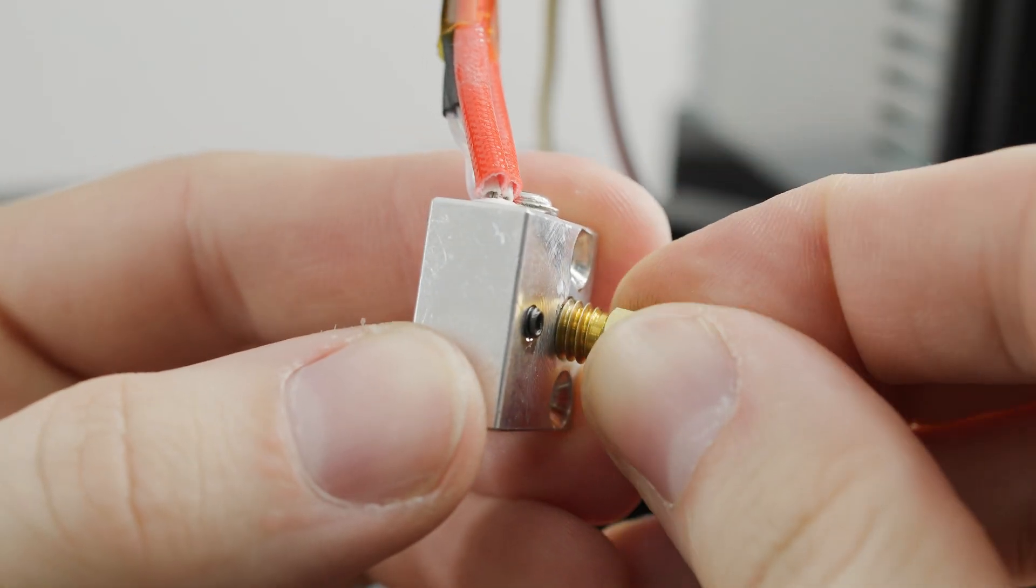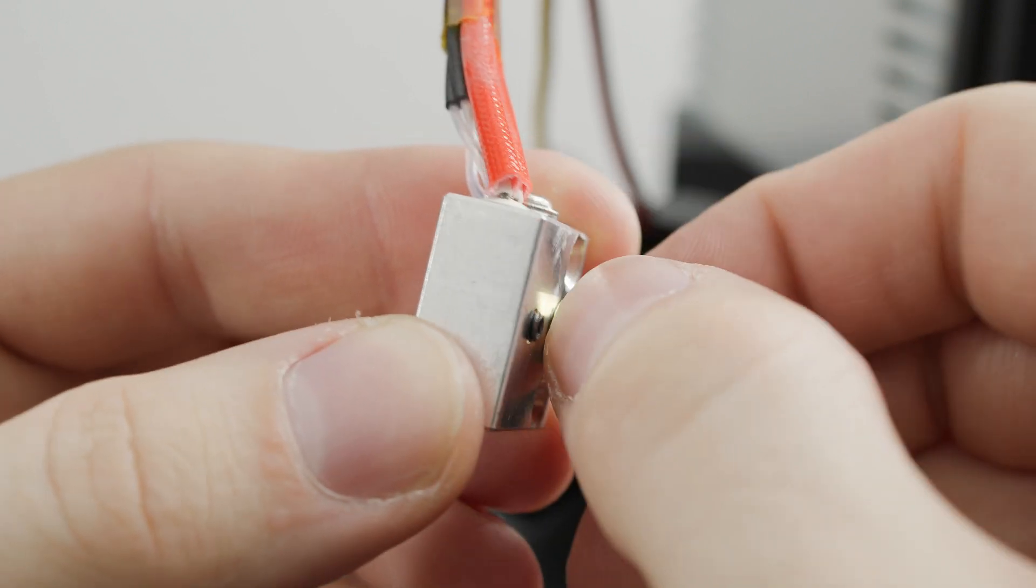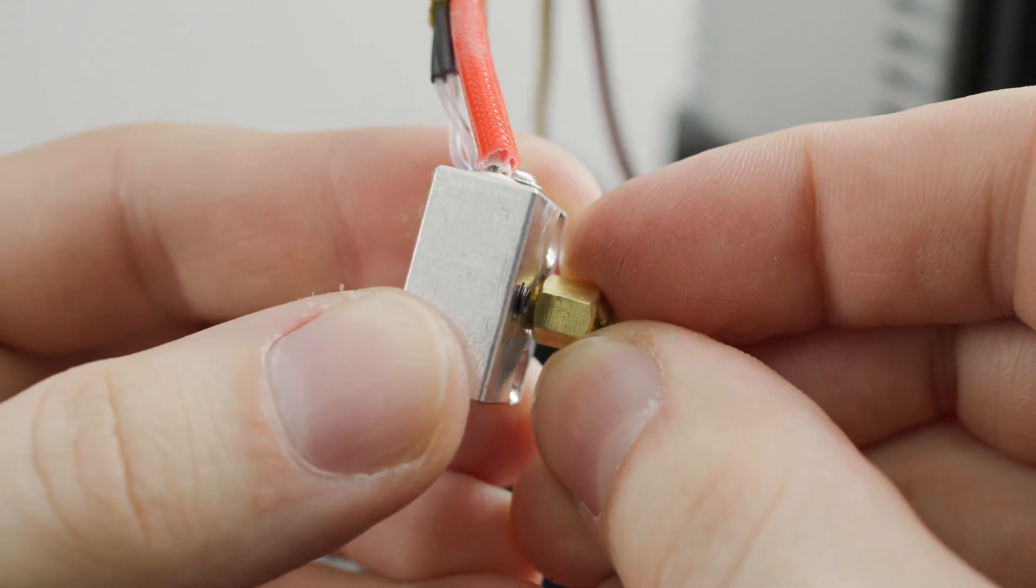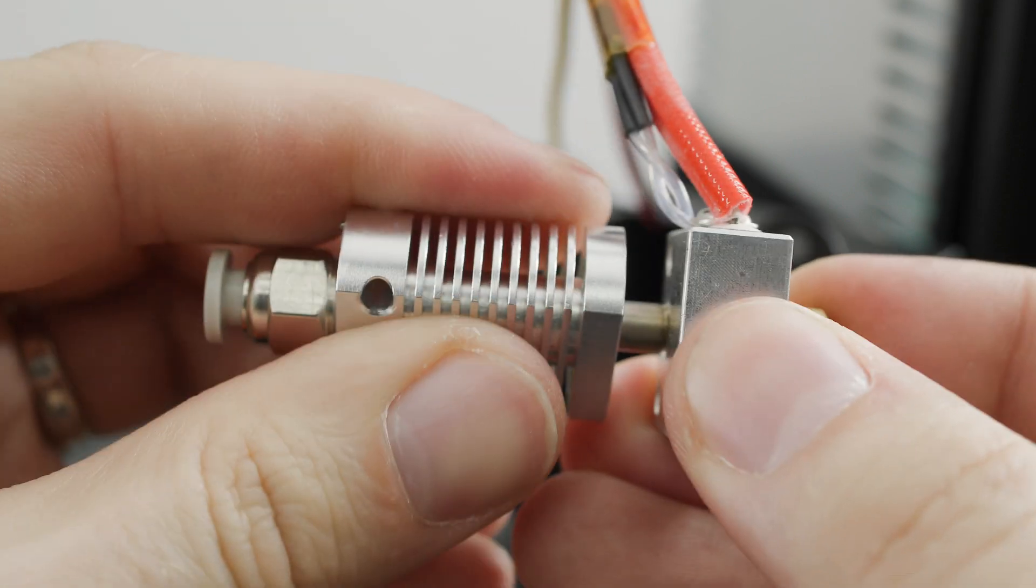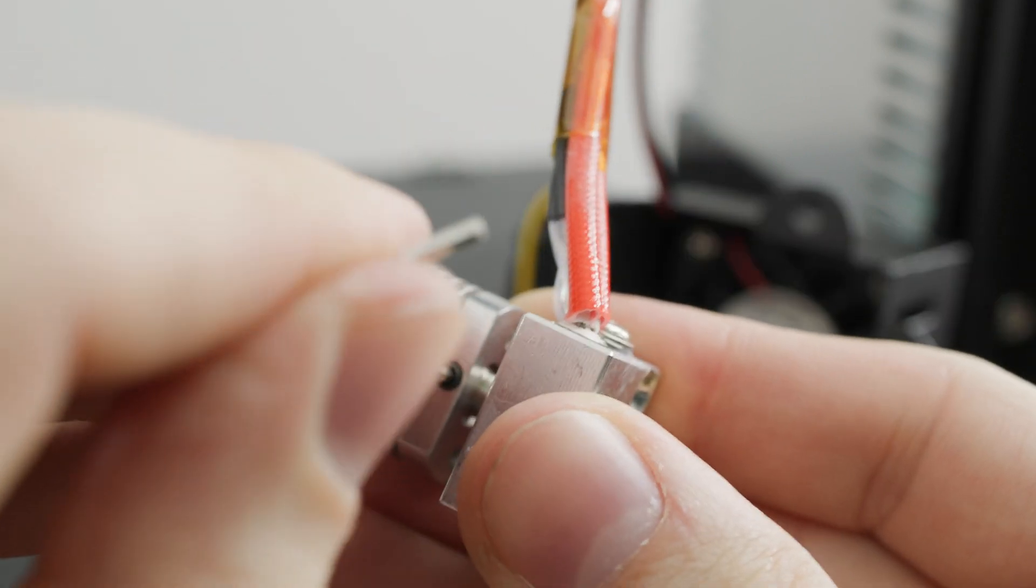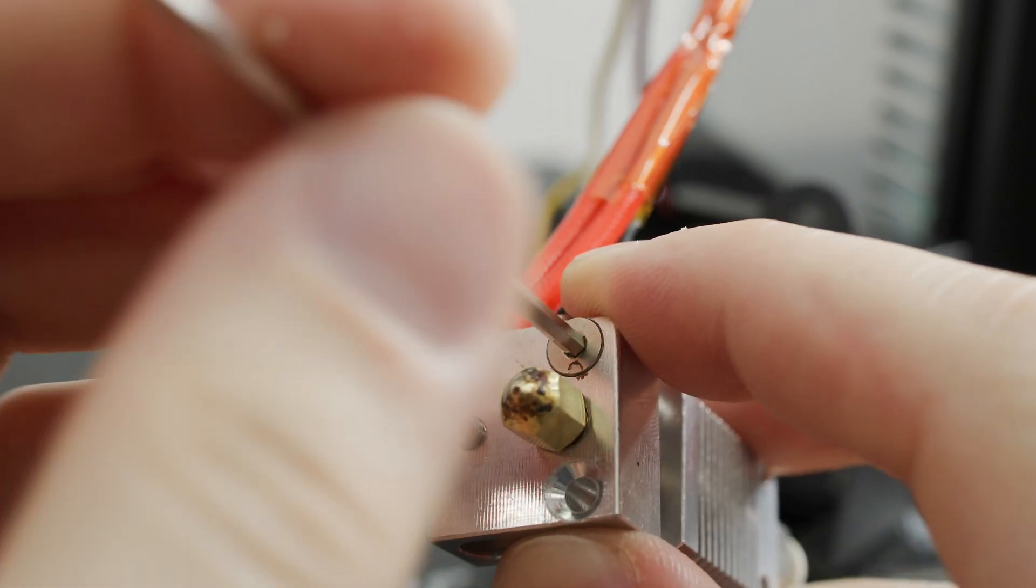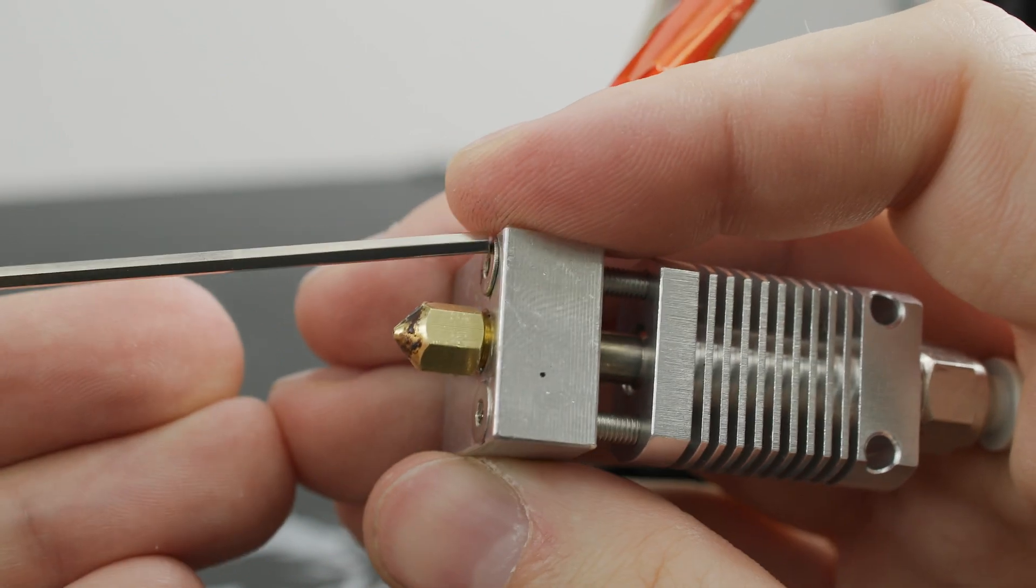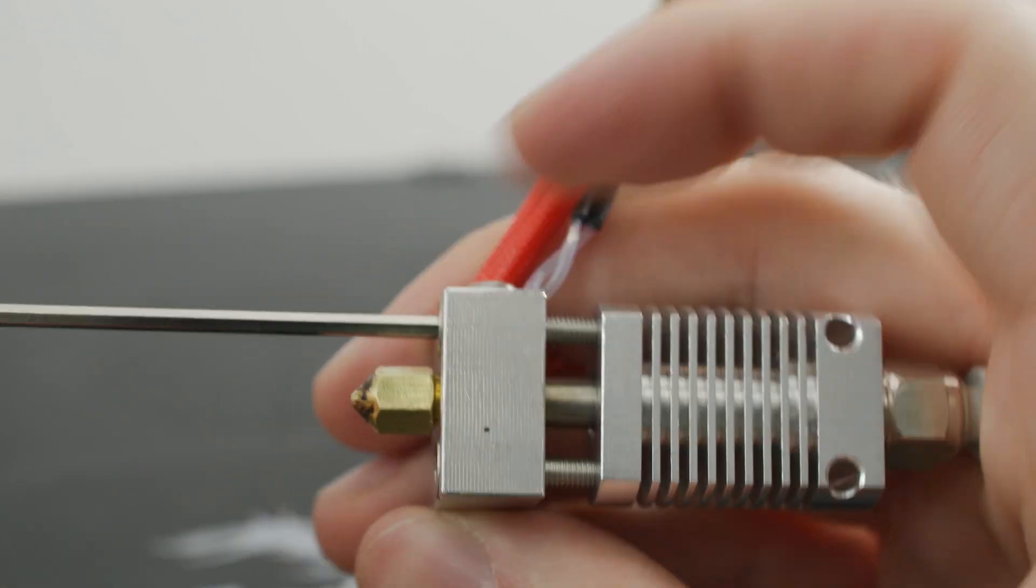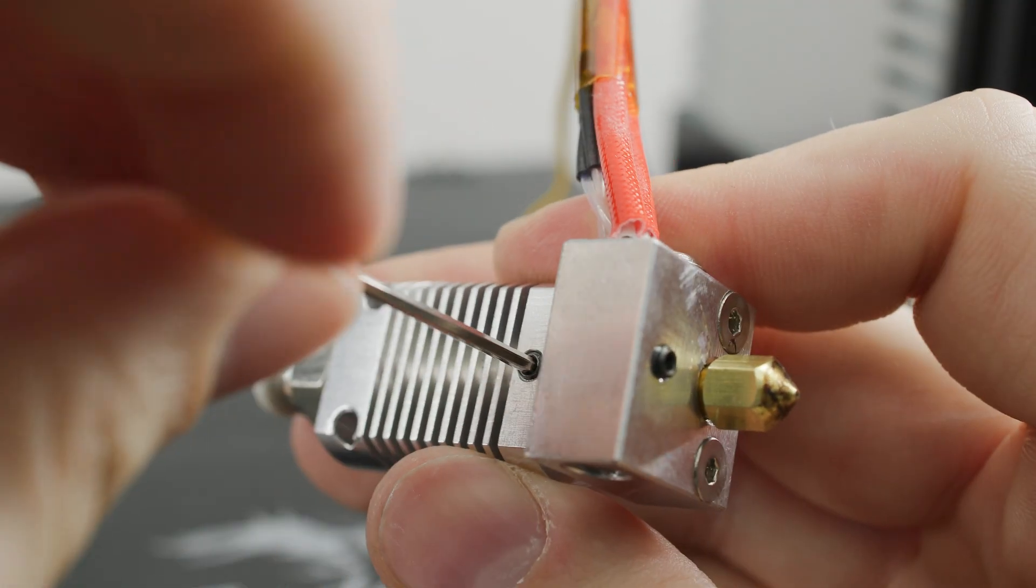Now it's time to put the hotend together. First, we screw in the nozzle and loosen it half a turn. Then screw the heat brake all the way in. Now loosen the worm and secure the heat sink with the screws. Tighten the screws one at a time so that both screws are screwed in the same depth. Finally, tighten the worm.